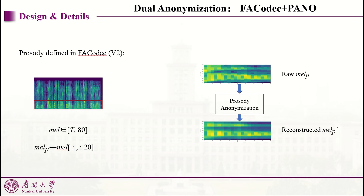FACODEC extracts the prosody from the low-frequency 20 dimensions of the 80-dimension mel spectrogram. Our prosody anonymization module converts the raw prosody from one speaker style to another. Let's see the architecture of the module in detail and how to implement the function.